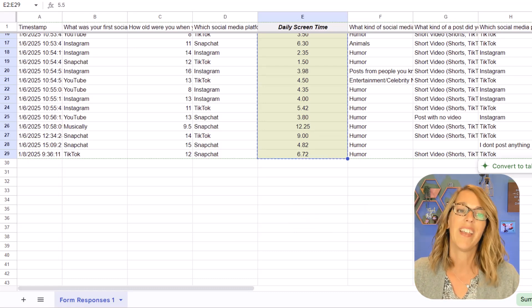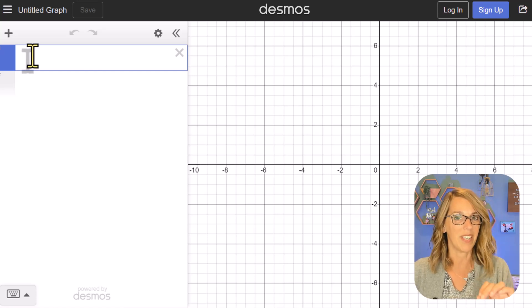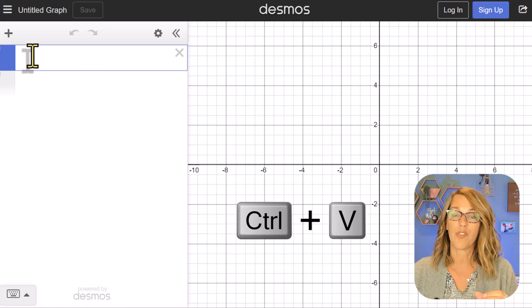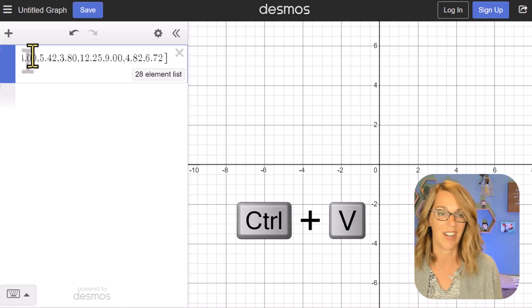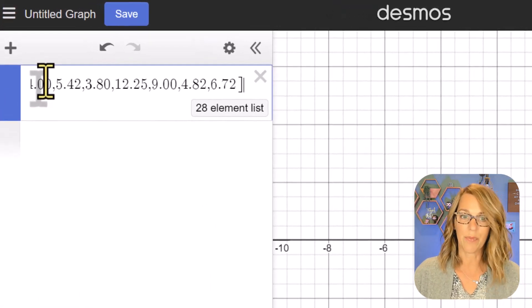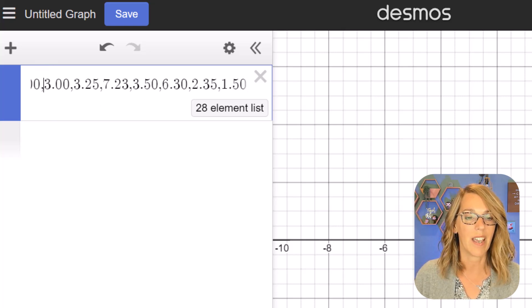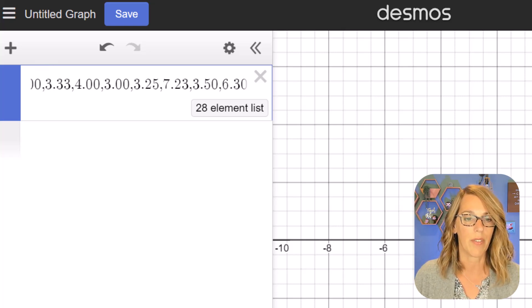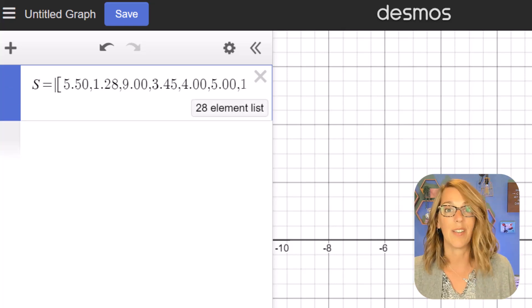So I'm going to do a control C back over into Desmos. I've got my cursor in an empty cell and I'm going to paste with a control V or command V on a Mac. So control V here. I've got this huge list. I really want to name it though. So I'm going to back up to the beginning of this list. I'm just about there and I'm going to call it just S for screen time. So capital S equals.